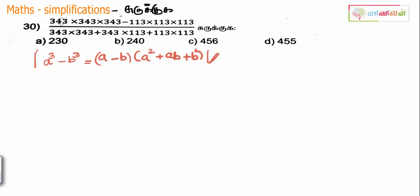We will talk about A cube: that is A, A, A — three times. And B, B, B is B cube. If you have a plus, that is different. If you have multiplication, we use A cube minus B cube. A cube minus B cube equals A minus B, into A square plus AB plus B square.